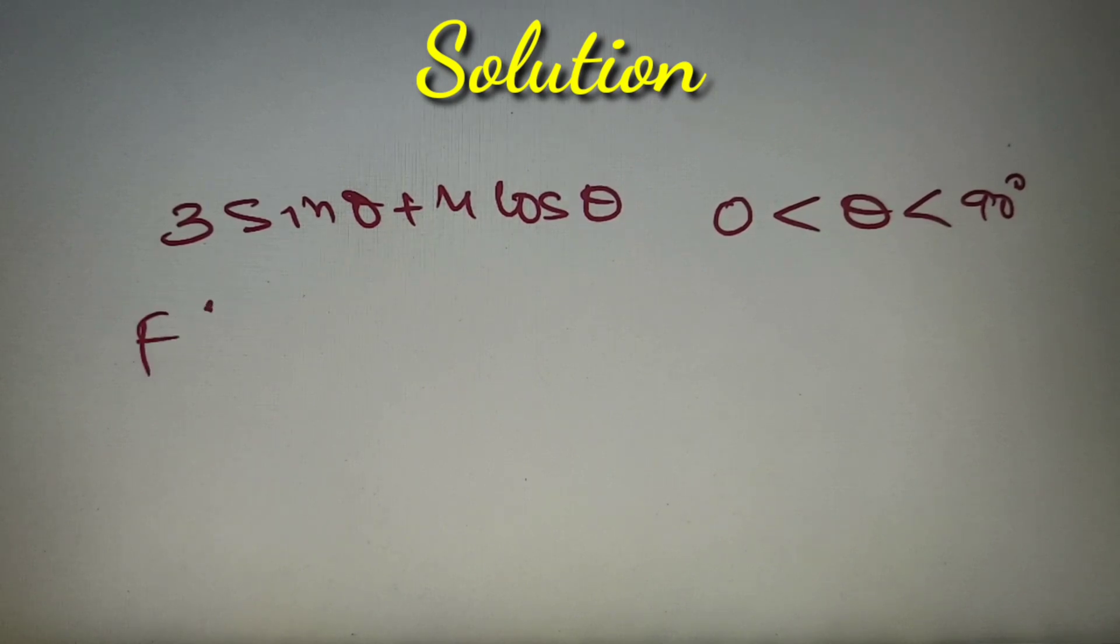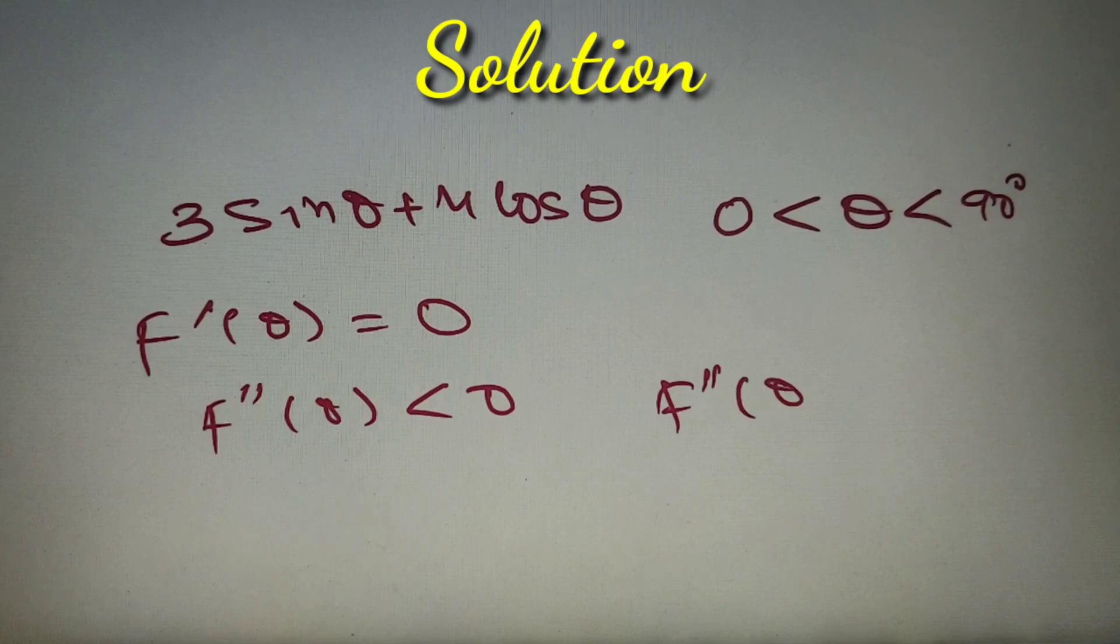In it we will first find f dash theta and equate it to 0. To find the minima or maximum value we have to use either of the conditions: if f double dash theta is less than 0 then we will get the maxima, and if f double dash theta is greater than 0 we get the minima.